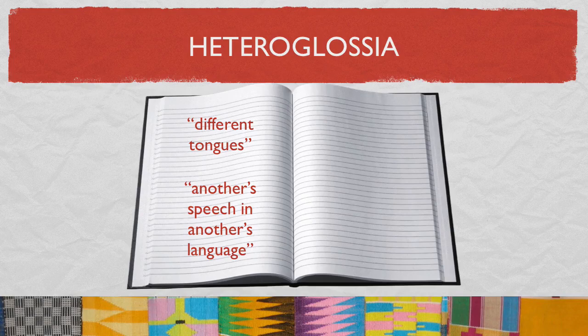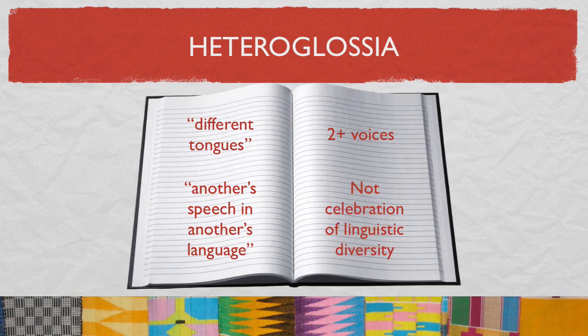According to Webster's New Millennium Dictionary of English, heteroglossia refers to the existence of two or more voices within a text, especially conflicting discourses within a linguistic activity, as between the narrative voice and the characters in a novel. And according to the Literary Encyclopedia, heteroglossia should not be confused with a simple celebration of linguistic diversity, for the term not only alludes to the coexistence of languages within a language, but their coexistence in a state of tension and competition.